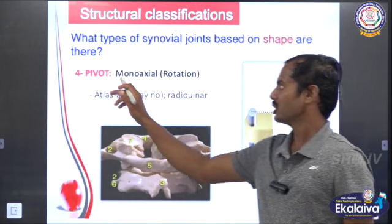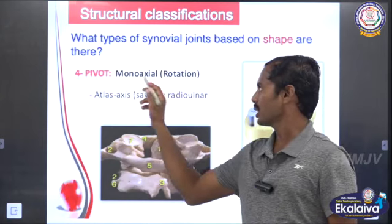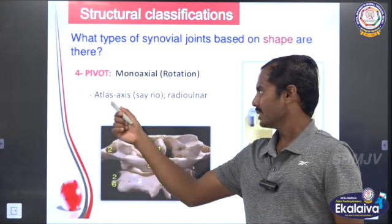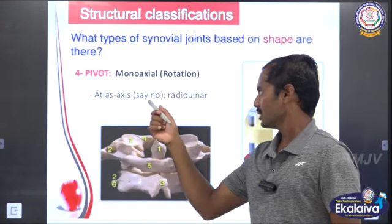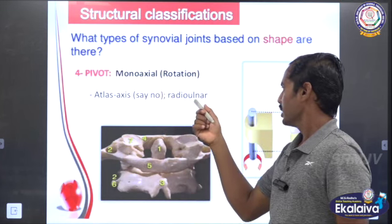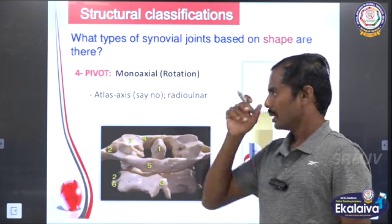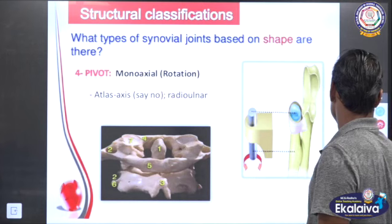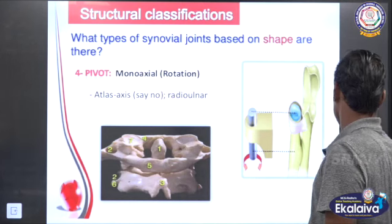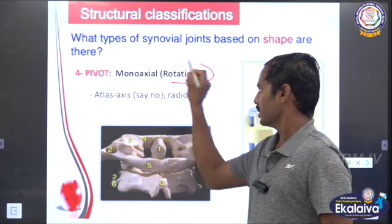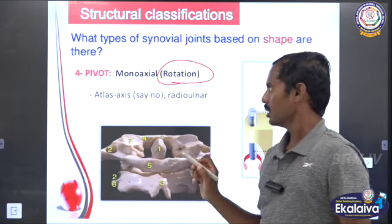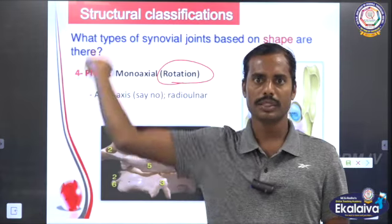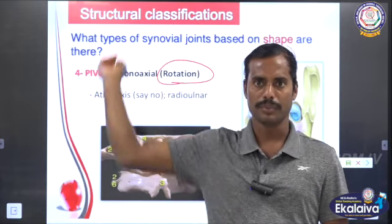Fourth one is the pivot joint. It is mono-axial with rotation only. Examples include the atlas-axis joint and the radial array. In the pivot joint, the only movement is rotation. If we move the neck, the movement is rotation.